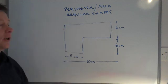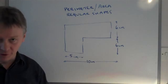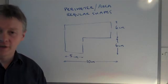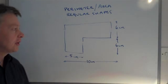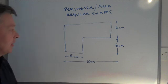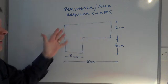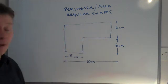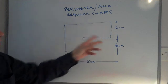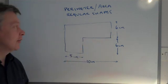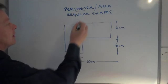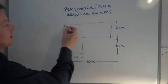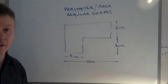I'm going to be talking about how to work out the perimeter and the area of regular shapes. Usually in an exam question, it will be given to you in this sort of format — usually it's an L shape, and they will give you some of the dimensions. The thing to remember is that the perimeter is the distance all the way around the outside.